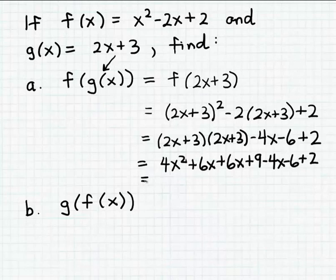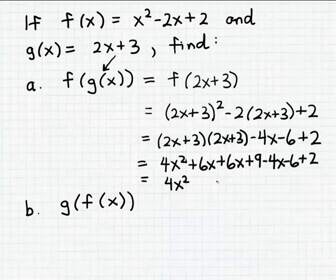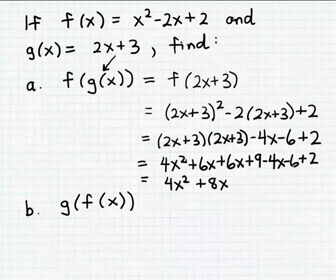Adding like terms together: there's only one x squared term, so we have 4x squared. For the x terms: 6x plus 6x minus 4x equals 8x. For the constants: 9 minus 6 plus 2 equals 5. So the final simplification for part a is f of g of x equals 4x squared plus 8x plus 5.